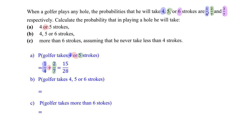In the same way, if I need to calculate the probability that he will take either four, five, or six strokes, I just need to add up the probabilities respectively. So it will be one quarter plus two over seven plus three over seven, which gives me 27 over 28. It still does not equal one — why?